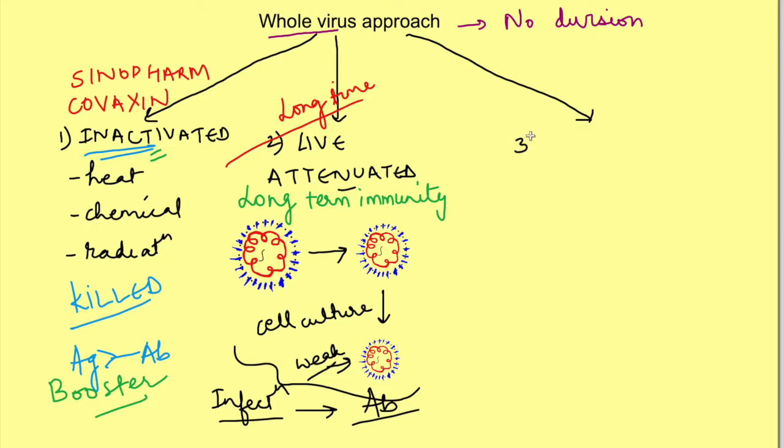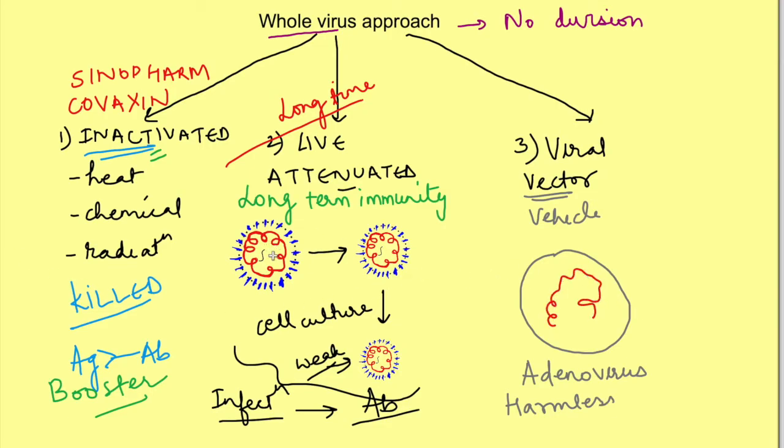Anyways there is a third sub category in this whole virus approach. It is viral vector vaccine. In this we use some other virus as a vehicle for carrying the instructions for making proteins responsible for infection. For example the whole virus we use is an adenovirus which is a harmless virus. It only causes common cold in us. So that whole virus is used and genetic material which is responsible for production of spike protein of the coronavirus is integrated with the adenovirus genome.